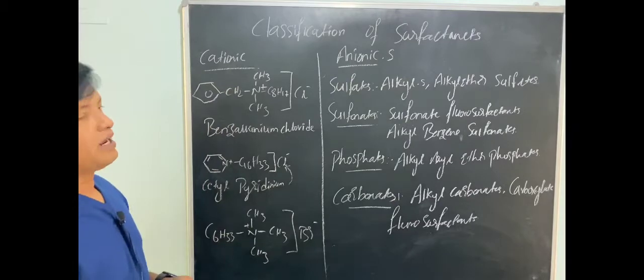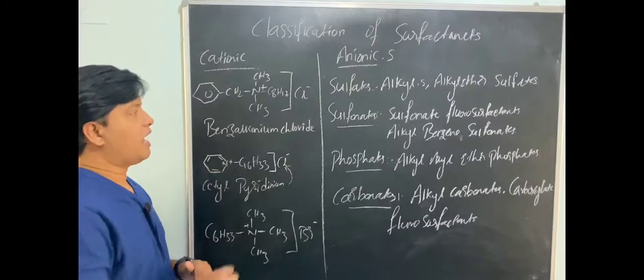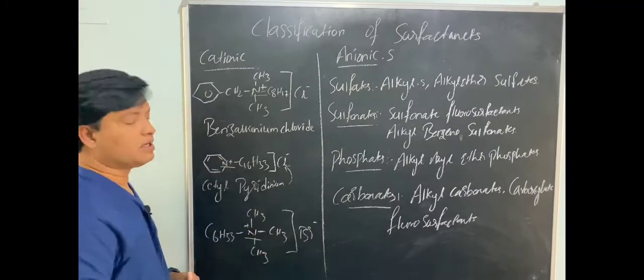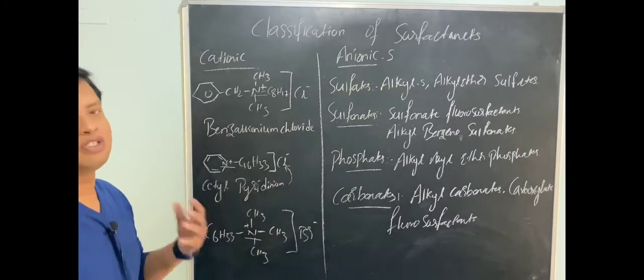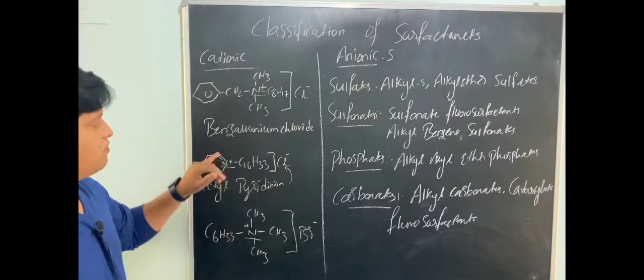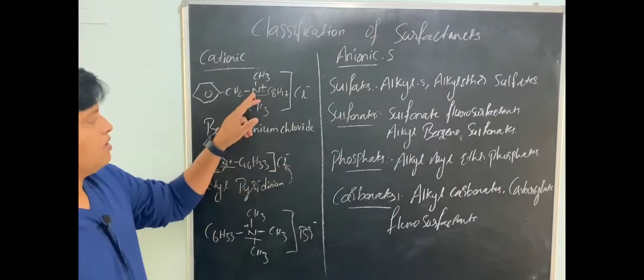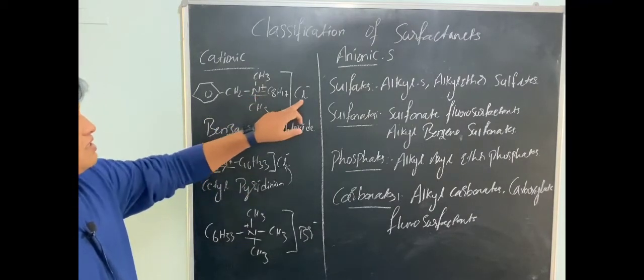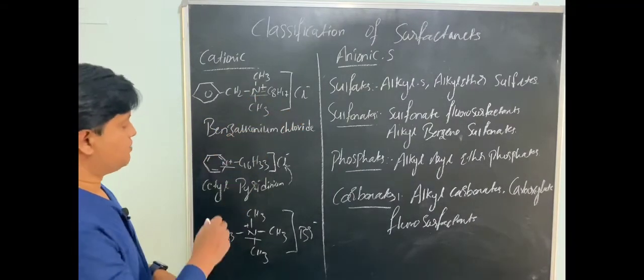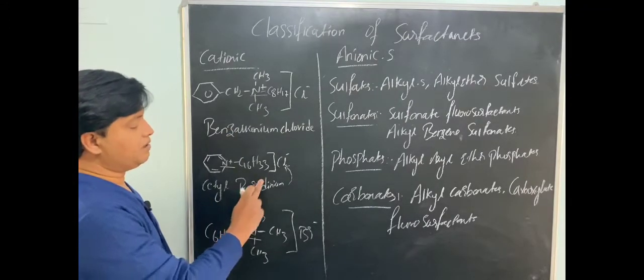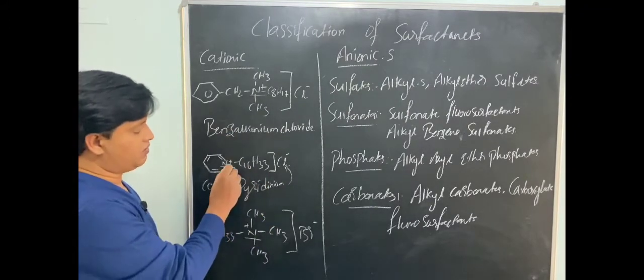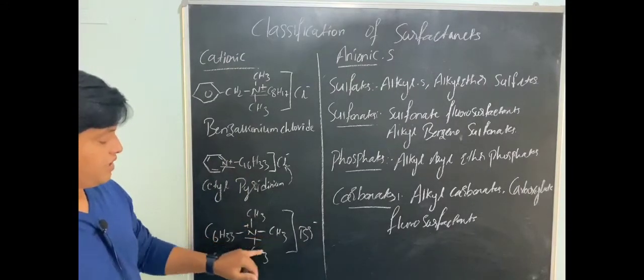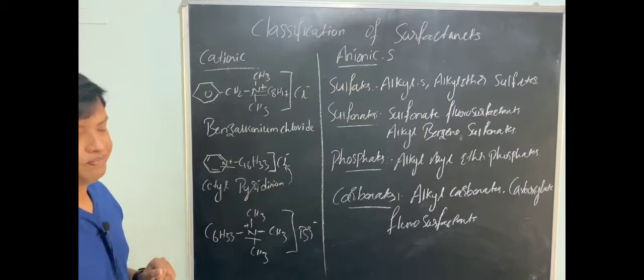First we will see about cationic surfactants. These surfactants have nitrogen in them which gives positive charge to the molecule. First one is benzalkonium chloride - we have nitrogen here and this is a counter ion. Next we have cetylpyridinium chloride, here also we have nitrogen. Then we have cetyltrimethyl bromide, here also we have nitrogen which gives positive charge to this surfactant.